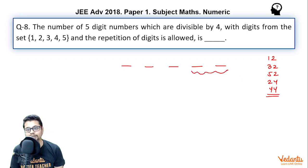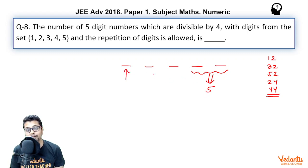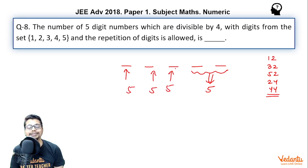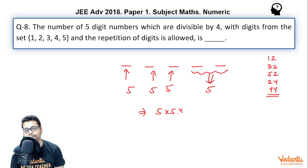So the last two digits can be filled in 5 ways. Since repetition of digits is allowed, the remaining three digits can each be any of 1, 2, 3, 4, 5 — that's 5 ways each. So the answer becomes 5 × 5 × 5 × 5 × 5 = 625.